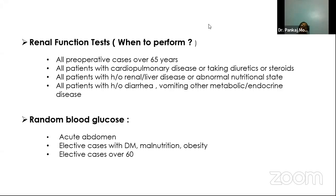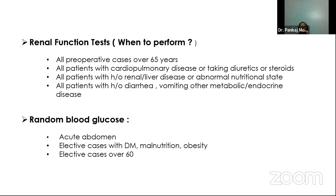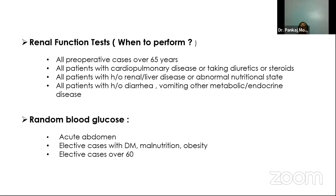Urine routine microscopy is also a renal function test and should be included. Anesthetists are justified in asking for electrolytes and urine RM in all patients because we do not know how the kidneys will react to anesthesia. In the era of litigation, this is important — we are justified in doing it in all cases. Do not fight with the anesthetist saying it is not indicated below 65 years just because the textbook says so.